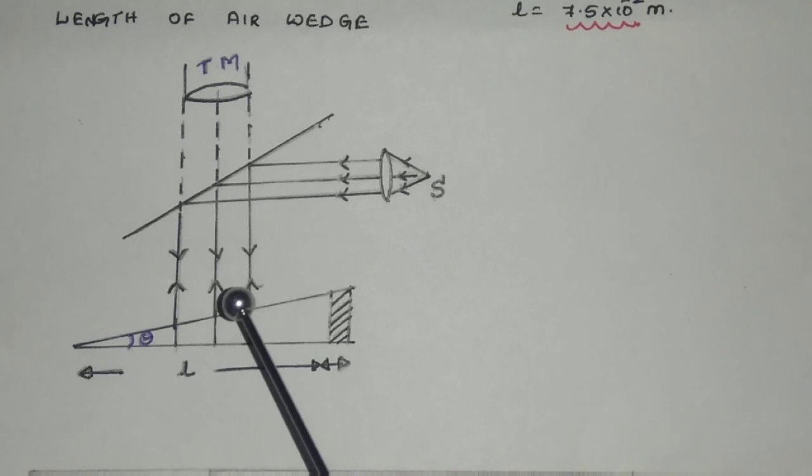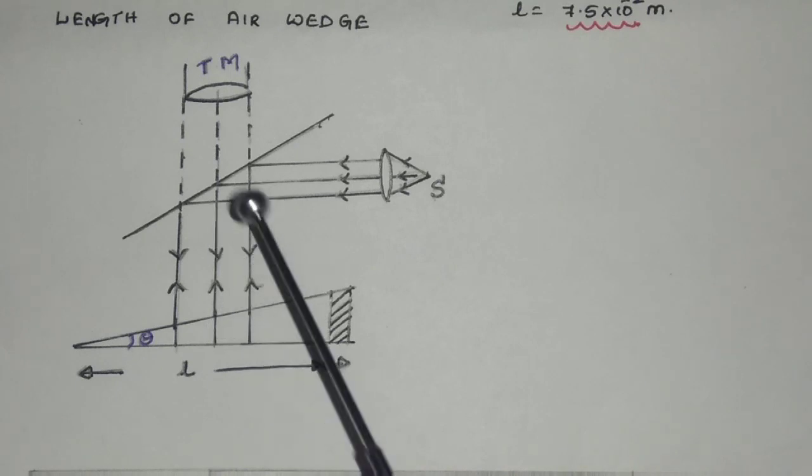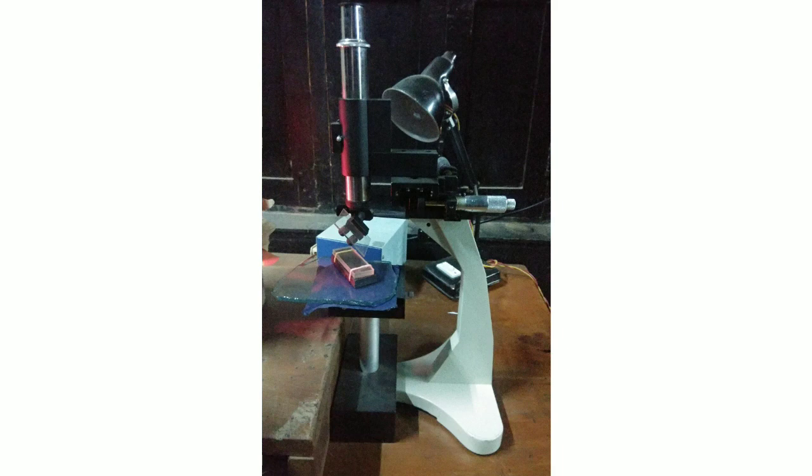Due to the overlapping of two reflected beams, bright and dark straight fringes are observed within the field of view of a travelling microscope. This is the travelling microscope we are using in this experiment where the least count is 0.01 mm. We are using a monochromatic light of wavelength 5893 Angstrom units.